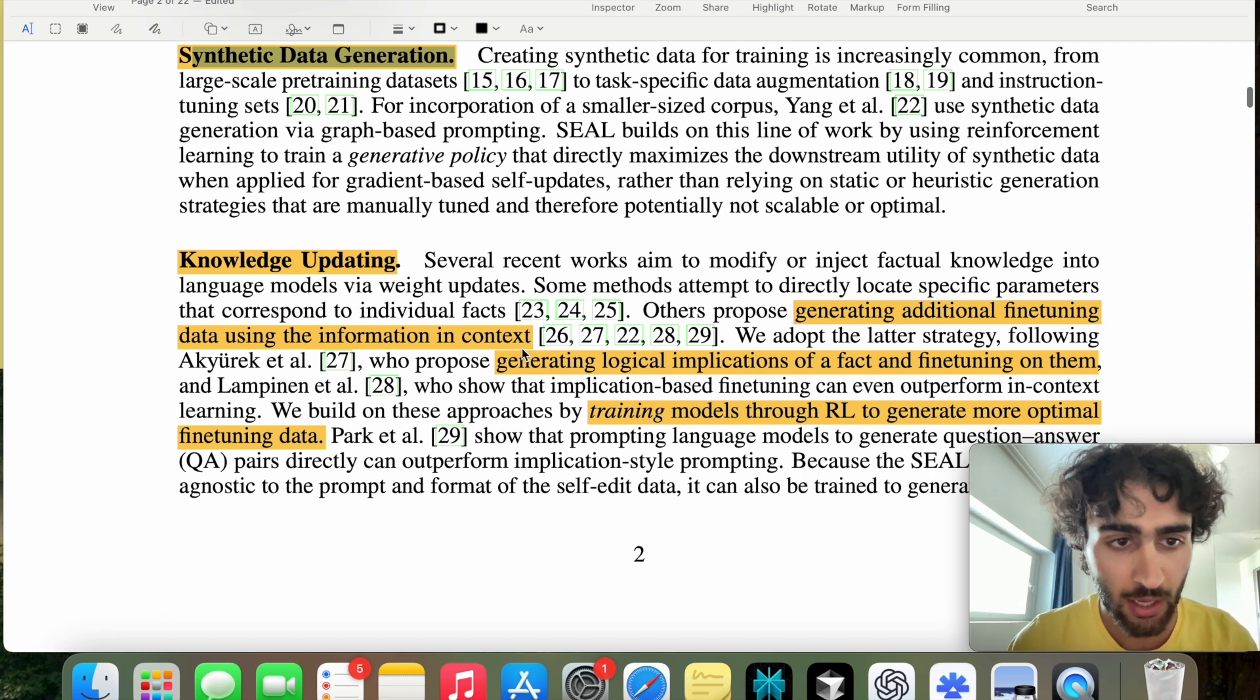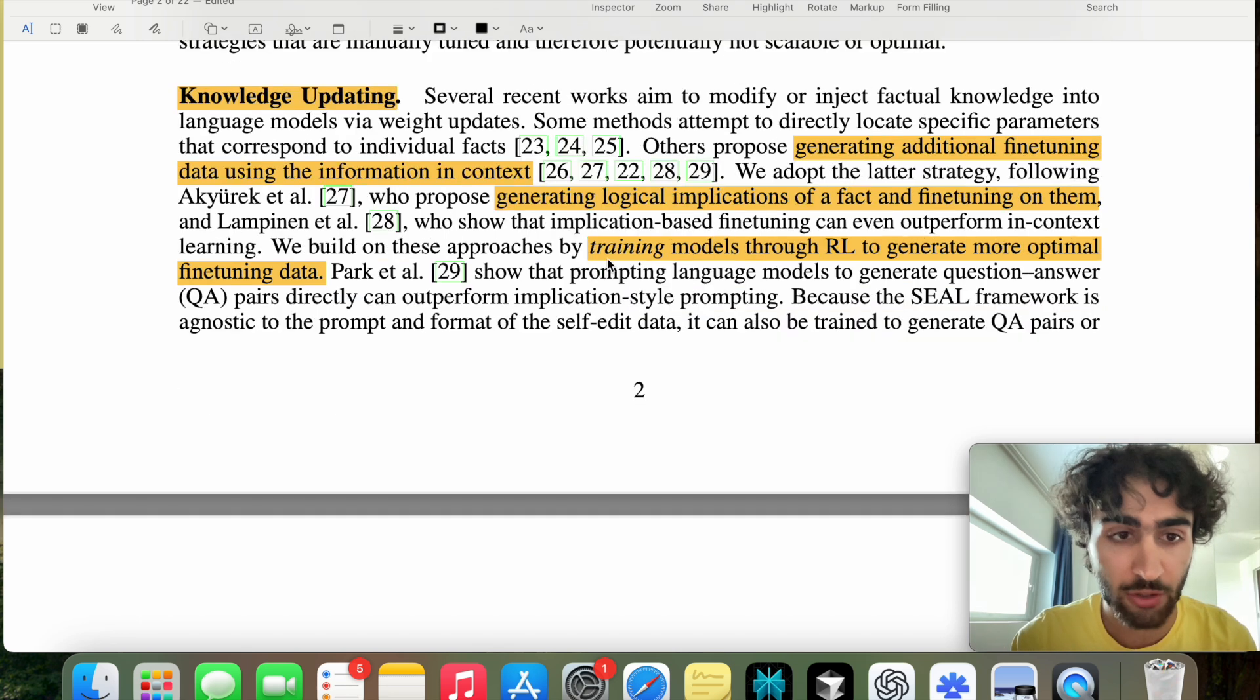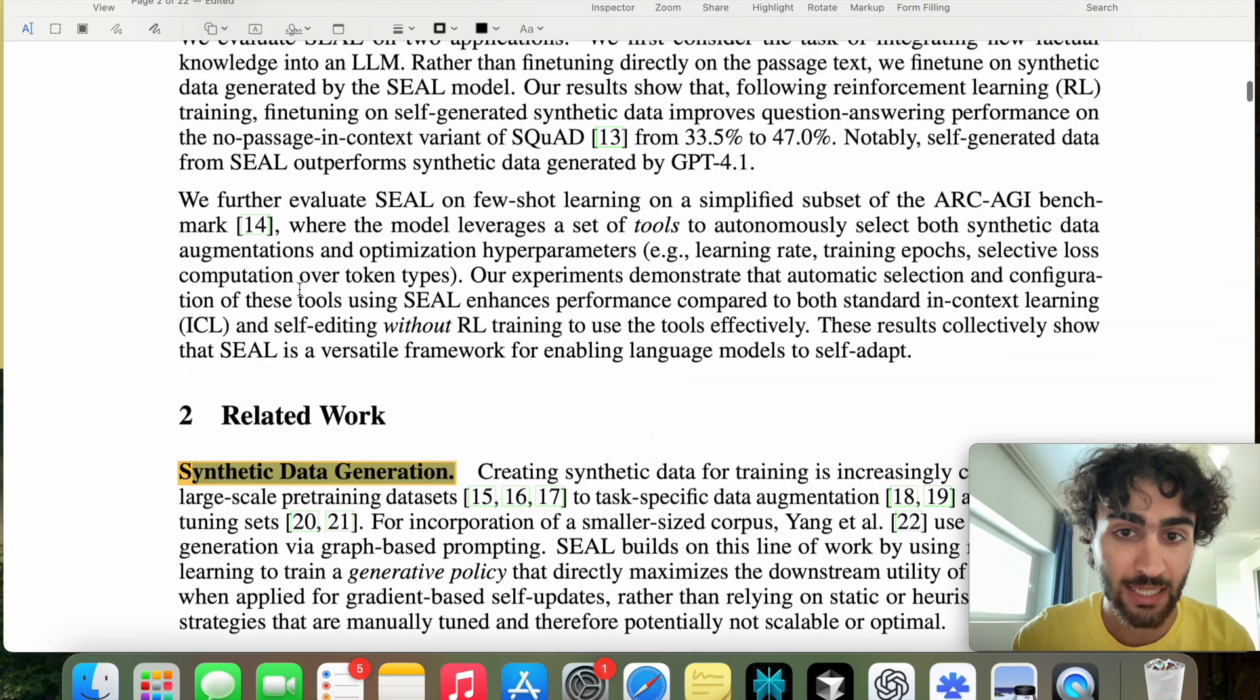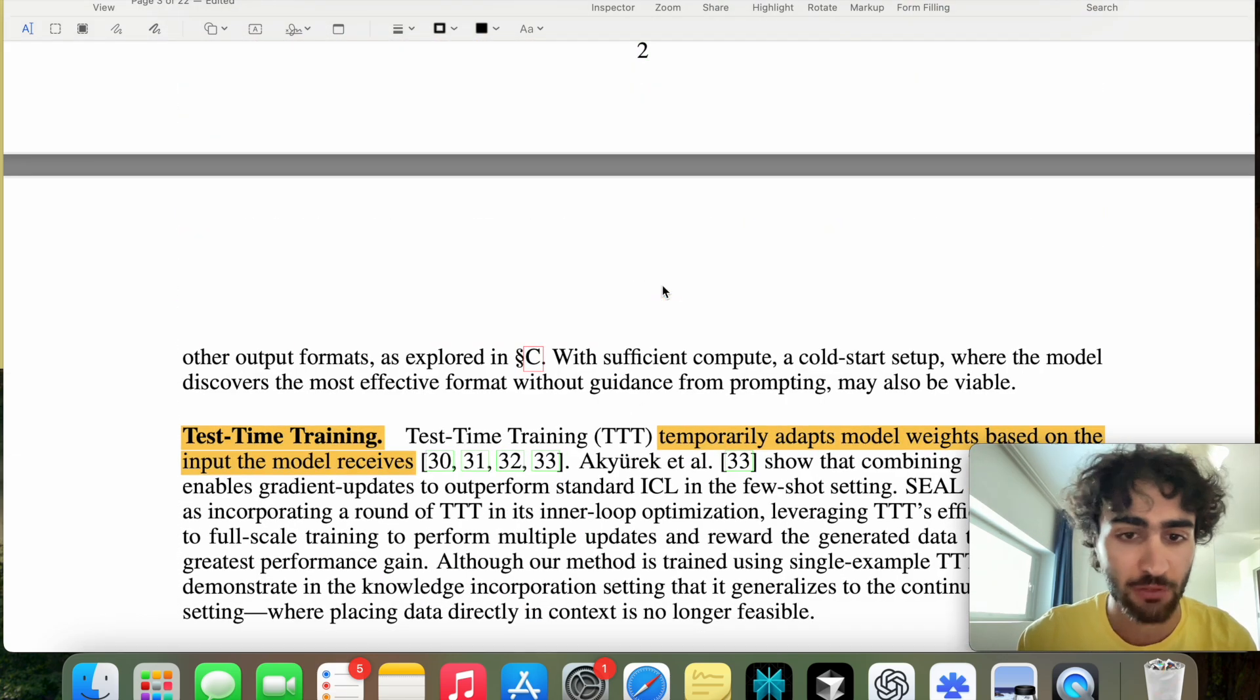And then what else are we talking about here? Oh, there's two strategies. So the first one being directly locating specific parameters that correspond to the individual task, which seems kind of like a local strategy, but they do the second one. In essence, generating logical implications of a fact and fine-tuning on them. And then they train these models throughout to generate more optimal fine-tuning data, which is this step here, the policy update, so that the data that is produced by the policy is iteratively improved.